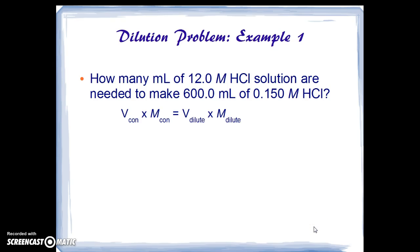We start with the equation that we saw just a moment ago. The volume of the concentrated times its molarity is equal to the volume of the dilute times its molarity. That means that we can algebraically solve for the volume of concentrated we need by dividing the product of volume and molarity of the dilute by the molarity of the concentrated.